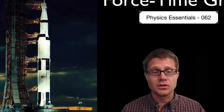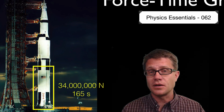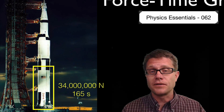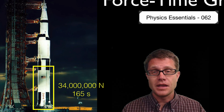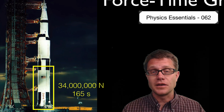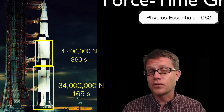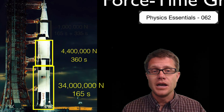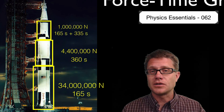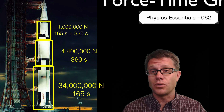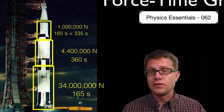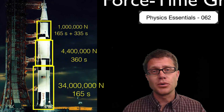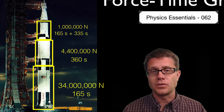It is a three-stage rocket. Stage 1 is the largest — 34 million newtons of force applied for 165 seconds. Then you have stage 2, which is over 4 million newtons of force, but it is longer at 360 seconds. Finally, stage 3 is a million newtons of force and it fires twice: the first time to reach escape velocity, and the second to put it on a trajectory to intersect with the moon.